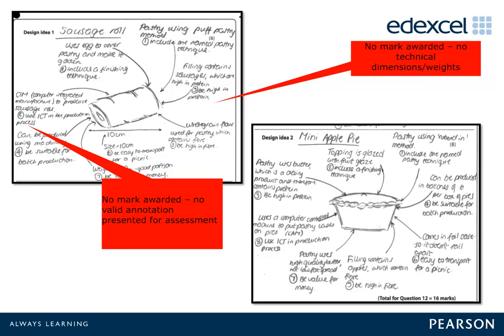Design idea 1: puff pastry 1, egg 1, sausage 1, production 0, flour 1, dimensions 1, value 0, CIM 0 — too vague. Equals 5 marks. Design idea 2: pastry 0, fruit glaze 0, butter 1, batch 1, apples 1, foil 1, value 0, lids 1. Equals 5 marks.